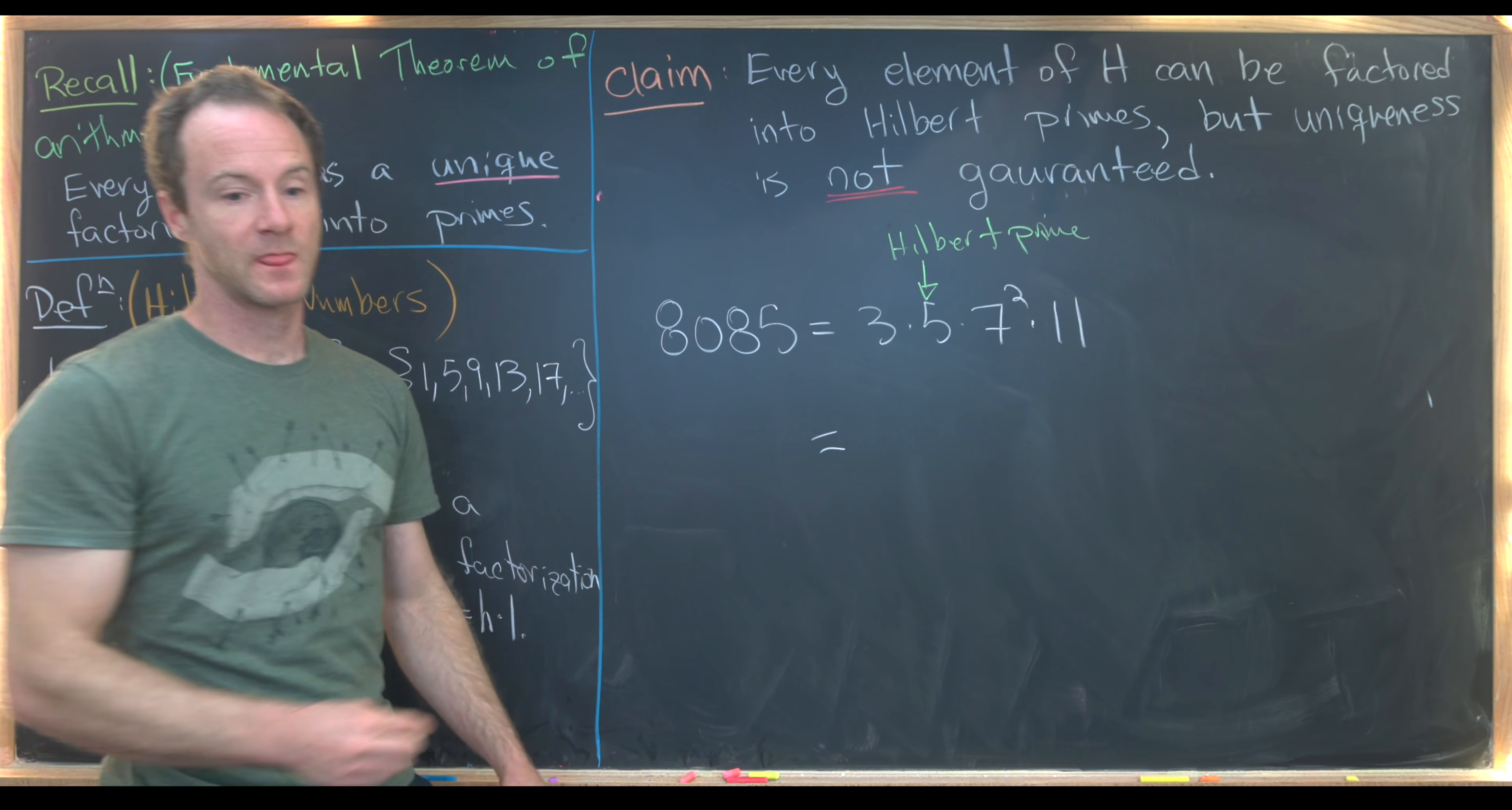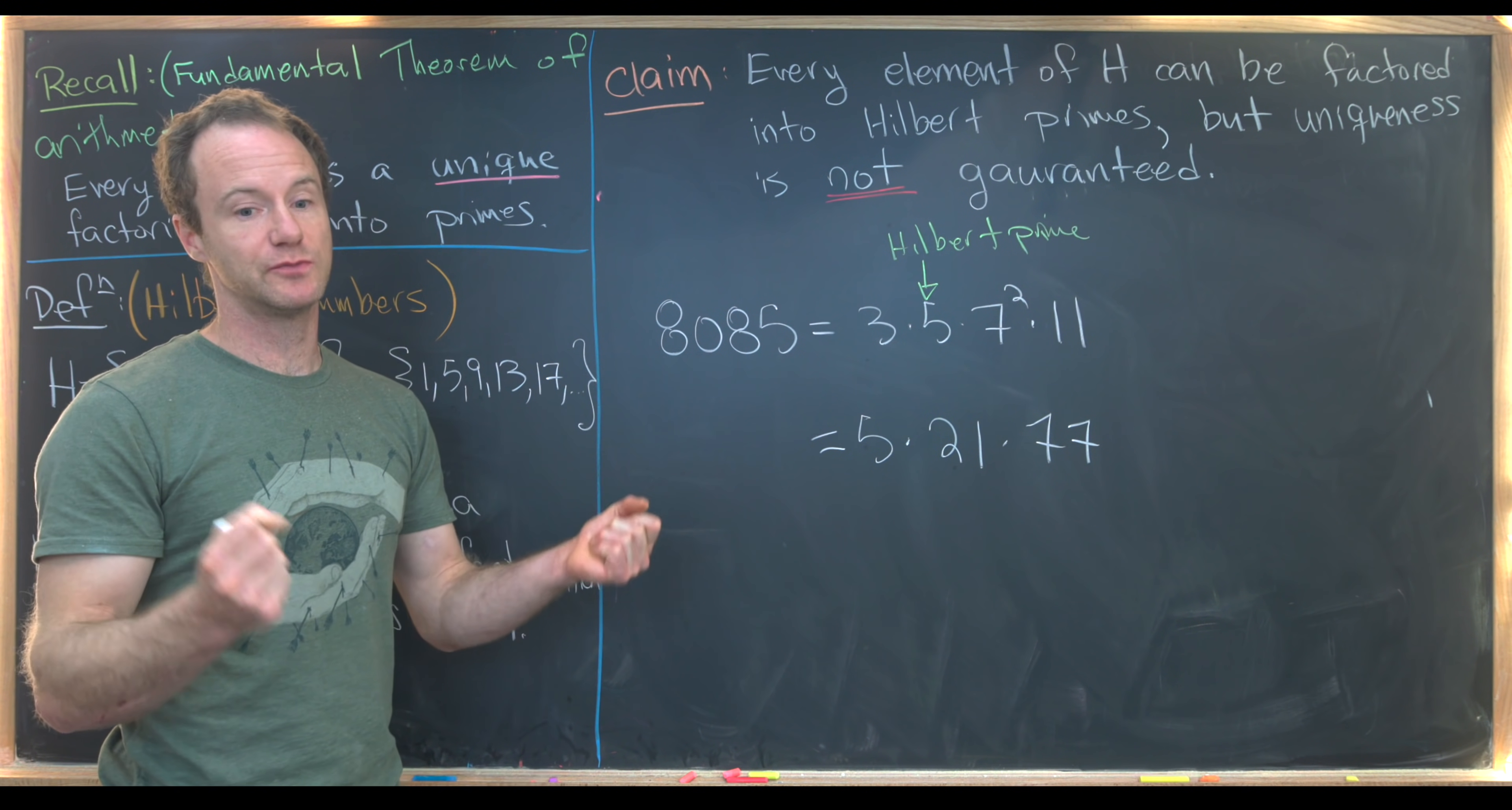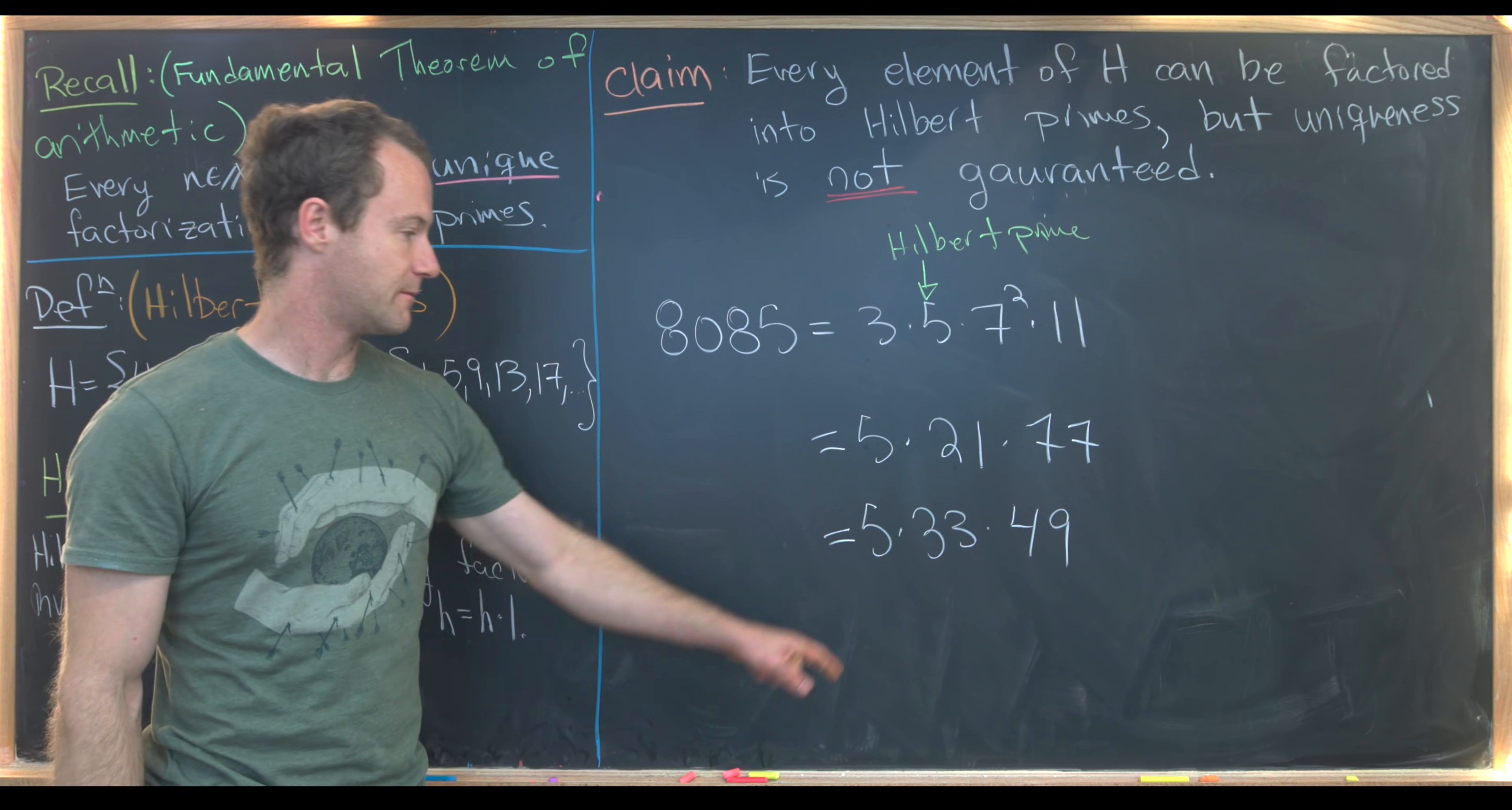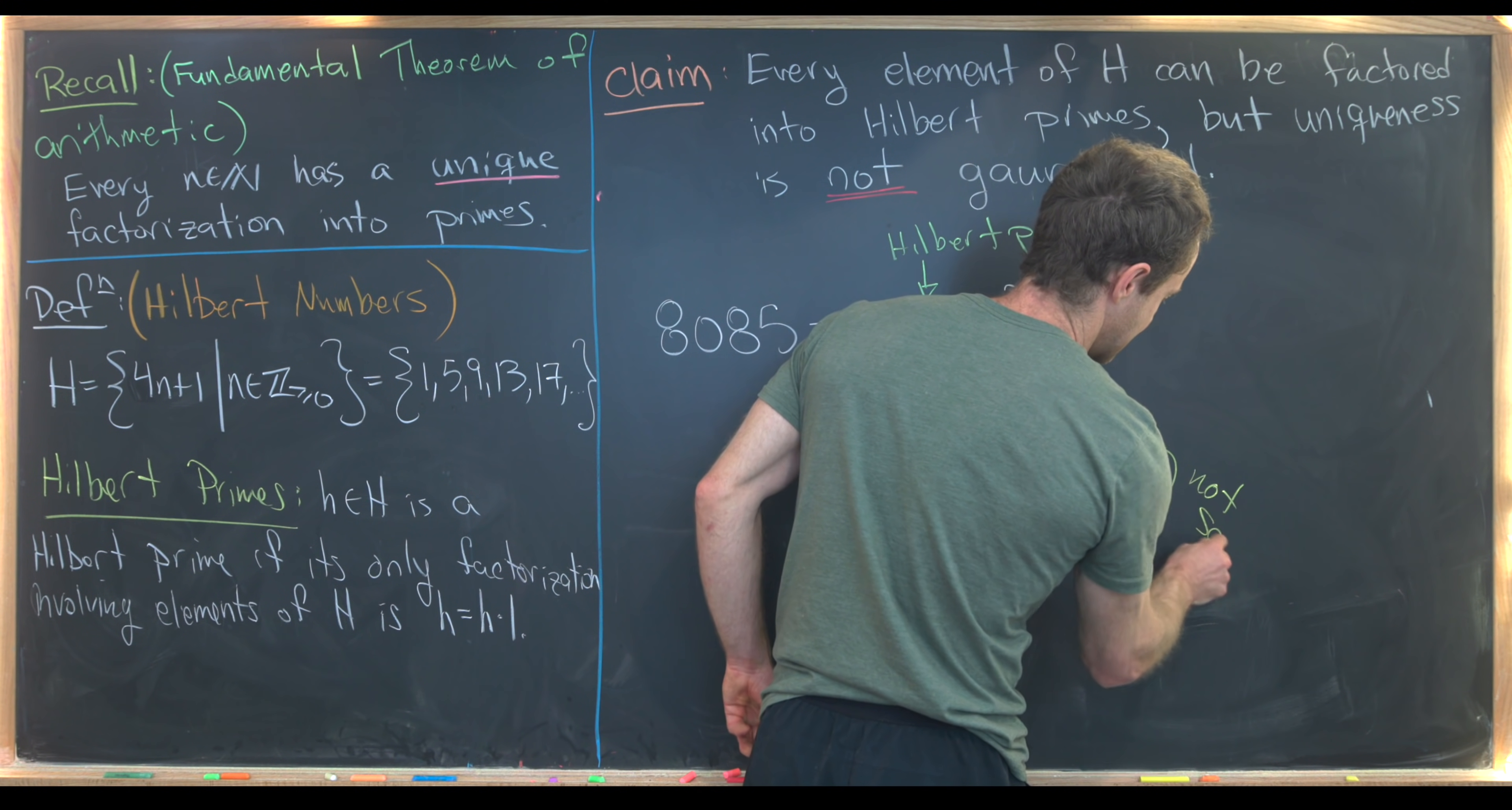One possibility would be 3 times 7, and then 7 times 11. Another possibility would be 7 times 7 and 3 times 11. That'll create Hilbert primes. So just to write that down, we'll have 5 times 21 times 77. So now we've got a Hilbert prime here, this is also a Hilbert prime, and this 77 is also a Hilbert prime. Again, because it factors into two primes that are non-Hilbert primes. Let's do it another way. We could also write this as 5 times 33 times 49. Again, 5 is a Hilbert prime, 33 is also a Hilbert prime, and 49 is also a Hilbert prime. But the really important thing here is that the list of Hilbert primes in each of these factorizations is not the same.